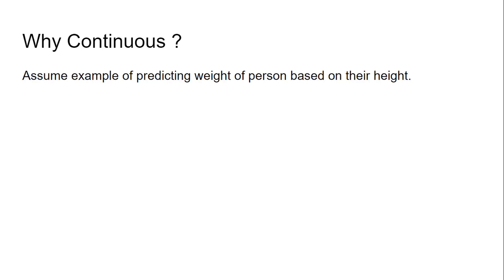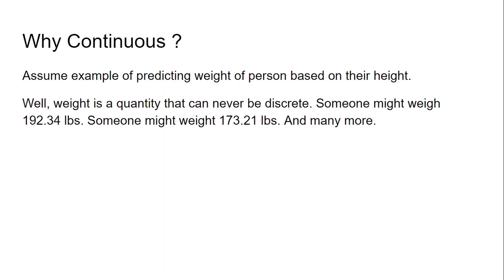Why continuous? Predicting discrete versus continuous — these are continuous values. Take the example of predicting the weight of a person based on their height. A tall person is generally going to weigh more than a short person. Weight is a quantity that can never be discrete — someone might weigh 192.34 lbs, another might weigh 173.21 lbs. These numbers are endless. You can also use regression for predicting stocks.